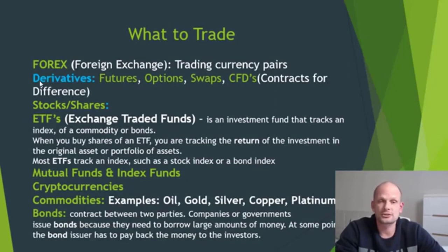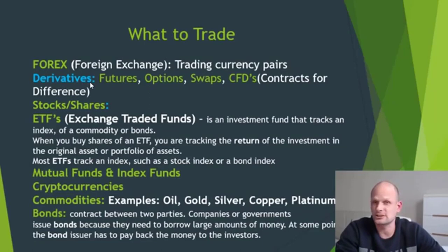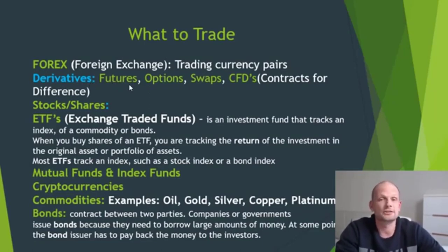Then we have derivatives. As I mentioned from the previous slides, these are contracts for differences, and all those green ones you can see are pretty much markets. So the first one is the Forex market, and then we get into derivatives. Derivatives is not a single market per se, but under the derivatives market there is the futures market, options market, swaps, and CFDs.